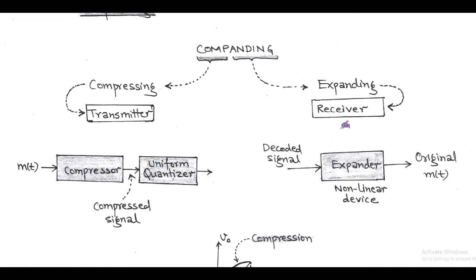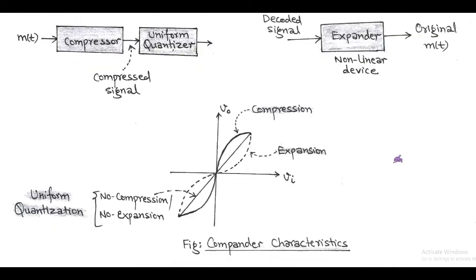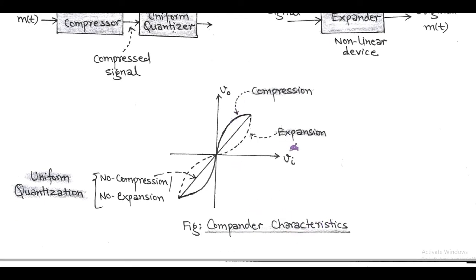At the receiver side, the transmitted signal gets decoded and then passed through an expander. The expander operates just inverse of the compressor and acts as a non-linear device. After decoding and expanding, we recover the original modulating signal M(t). This companding process has a characteristic represented by output voltage versus input voltage, where the solid line represents compression and the dotted line represents expansion. Due to the inverse nature of compressor and expander, the overall characteristic is linear.